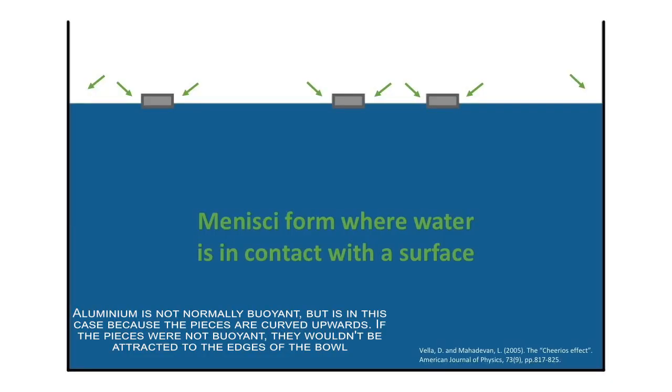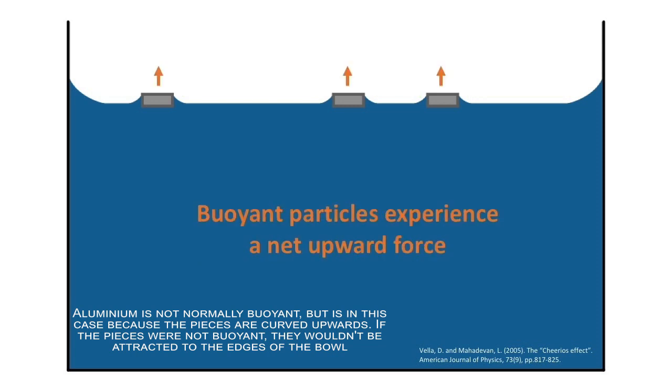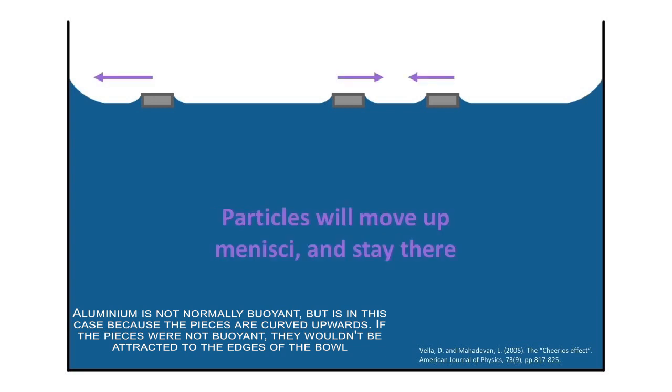Our binding force of surface tension works because of something called the Cheerios effect where there is contact between water and most types of surface a meniscus will form. Because floating particles experience an upward force when they float into a meniscus, they will travel up the meniscus to the highest point.